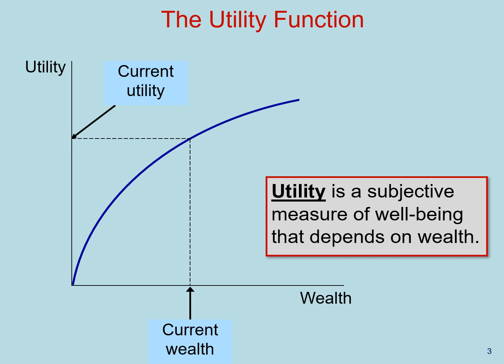Utility is a subjective measure of well-being that depends on an individual's choices. But because choices are many, let's keep it simple and say that this well-being is going to depend on wealth. So the utility function is simply a mapping between wealth and utility — it tells you your current level of subjective utility given your current level of wealth.